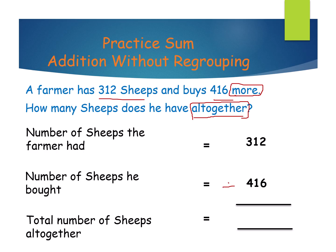Here we are doing addition, so keeping the plus symbol and writing the place values — hundreds, tens and ones. In the ones place, the digits are 2 and 6. 6 is bigger than 2, so keep 6 in your mind and open 2 fingers. What is 6 after? 7 and 8. 2 plus 6 equals 8.